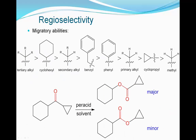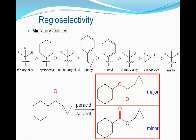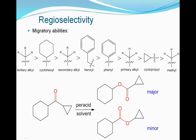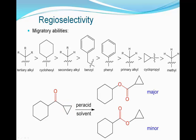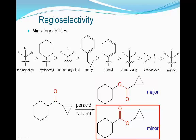In this illustrated example, two different Baeyer-Villiger oxidation products will be formed. Based on the relative migratory abilities, one should expect that the cyclohexyl group has a greater tendency to migrate compared to the cyclopropyl group. Thus, the top ester will be the major product while the bottom ester will be the minor product.